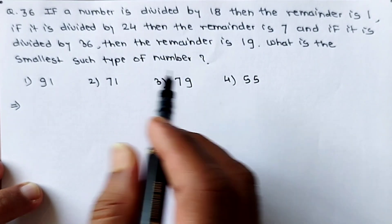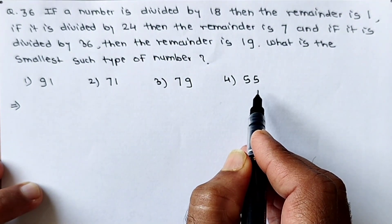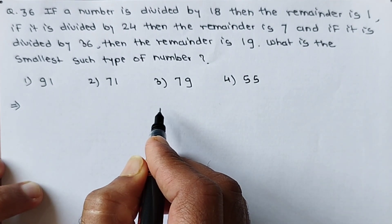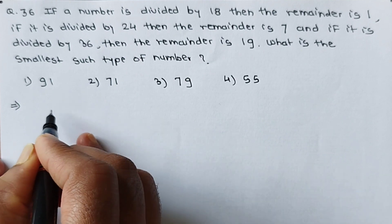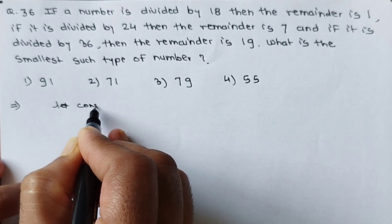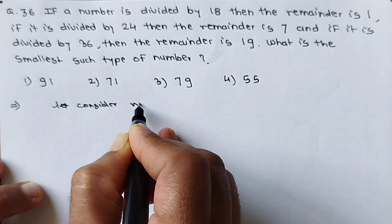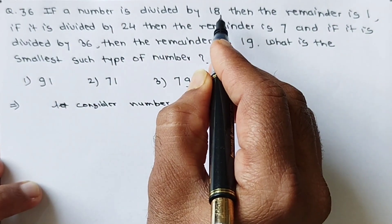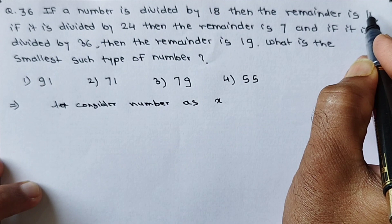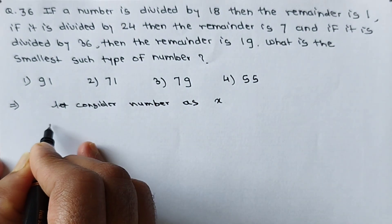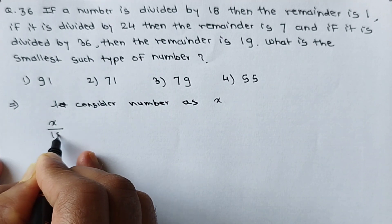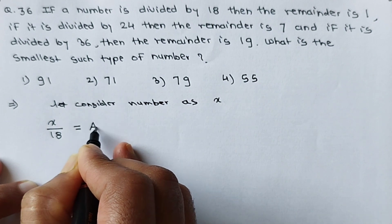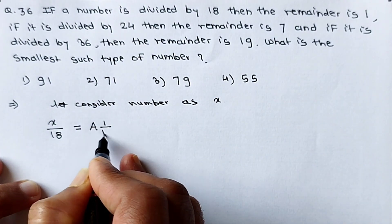By using the options directly we can find the correct answer. But here I will explain a basic method. Consider the number as x. Then the first statement: if x is divided by 18, there will be a whole number quotient — let it be a — and remainder is 1, so we write it as 1 upon 18.